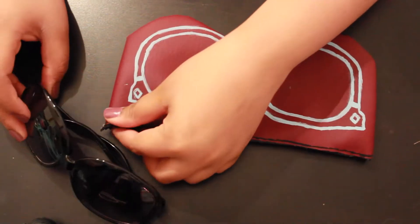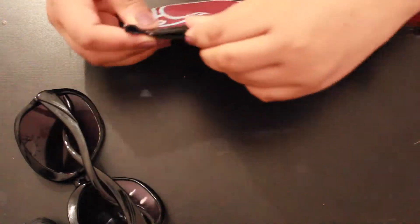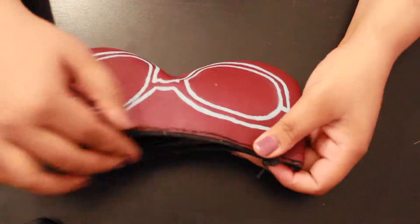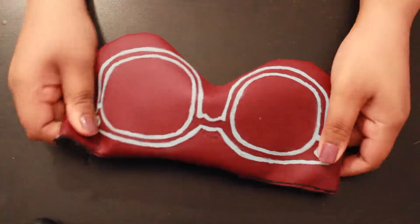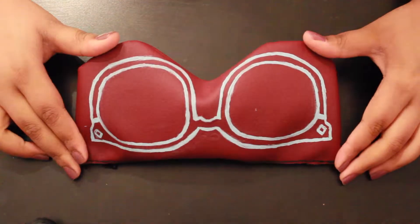And there you go. You now have a sunglasses case. I realize that it didn't turn out exactly the way that the Rebecca Minkoff case looks like, but I hope you really enjoyed this DIY. And if you did, please like and subscribe to see more. I'll see you in my next one. Bye!